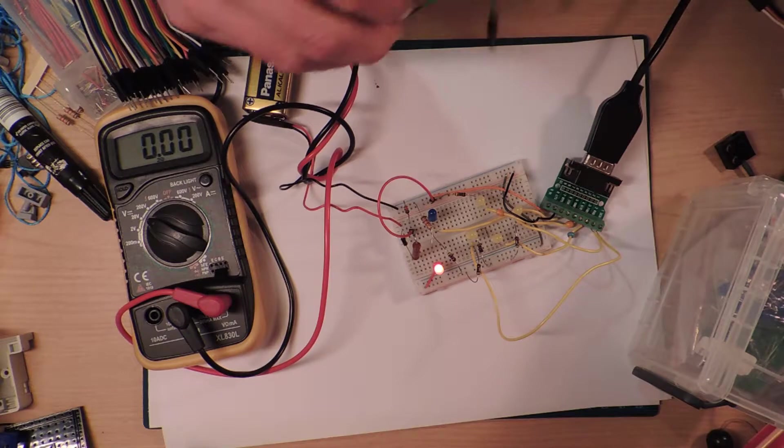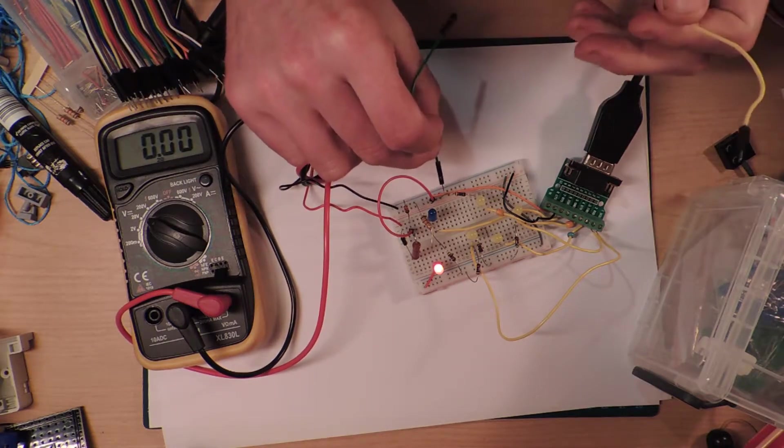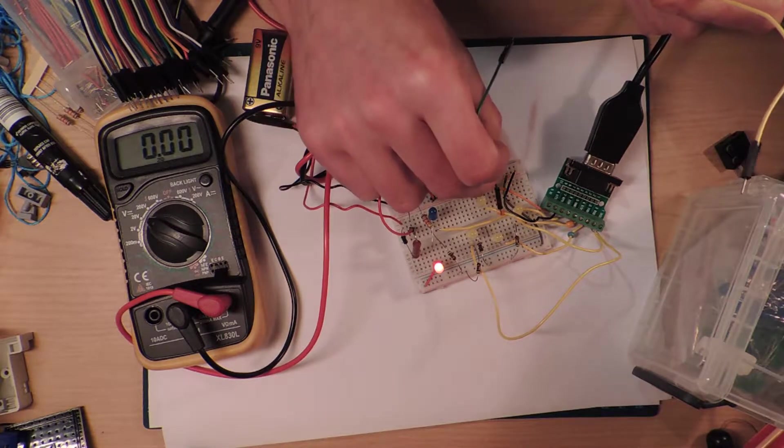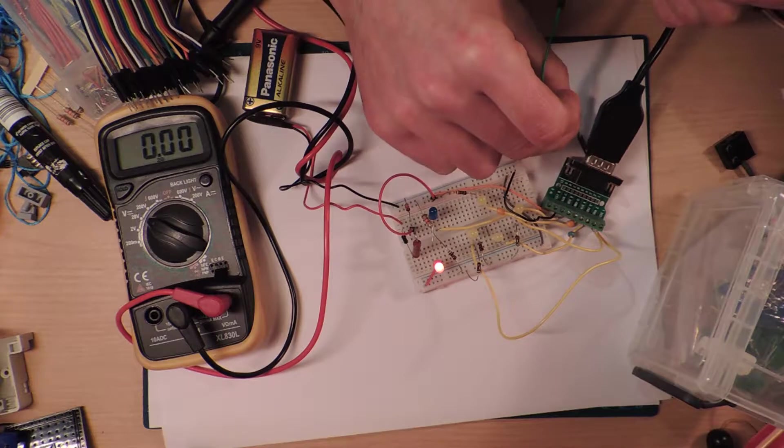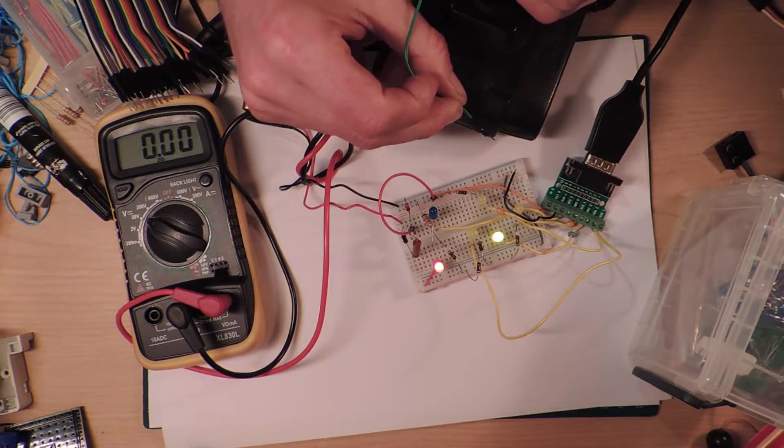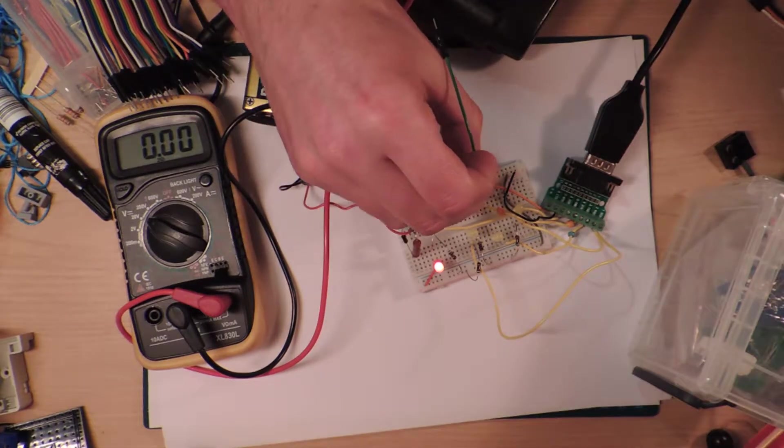And all we're going to do is. We're just going to essentially. Well, not short them to ground. But if we remember what's happening here is. So, from the positive rail. We're going through a resistor. Into the LED. And then that's going into the joystick. And then the joystick. When you move it in a direction. Pulls it. Connects the switch.